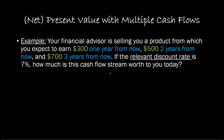The present value computation is very similar. Let's suppose you have a financial advisor and she's selling you an investment product from which you can expect to earn $300 one year from now, $500 two years from now, and $700 three years from now. If the relevant discount rate is 7%, the question is: how much is this cash flow stream worth to you today? I urge you to represent these cash flows using a timeline because it helps you see all the different cash flows and know how to discount them properly.